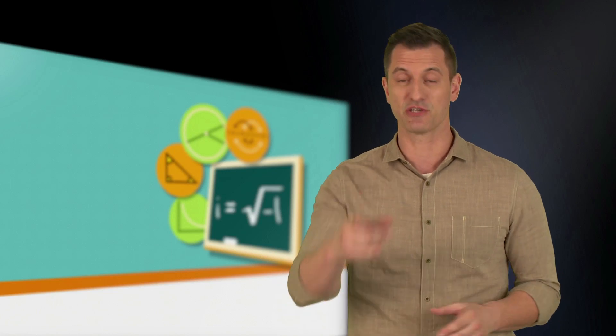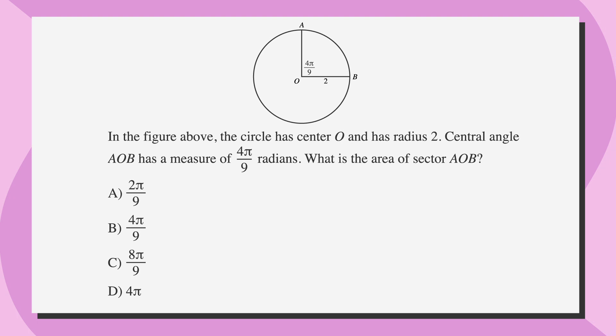Now that we know how to convert radians to degrees, let's practice. Here's a question similar to one you might see on the SAT. In the figure above, the circle has center O and has radius 2. Central angle AOB has a measure of 4 pi over 9 radians. What is the area of sector AOB?